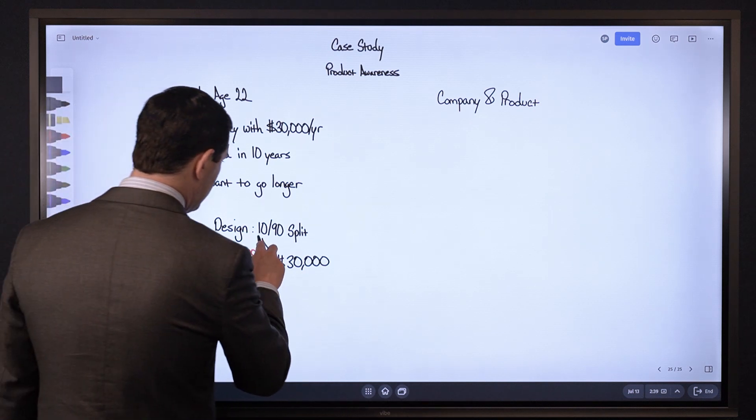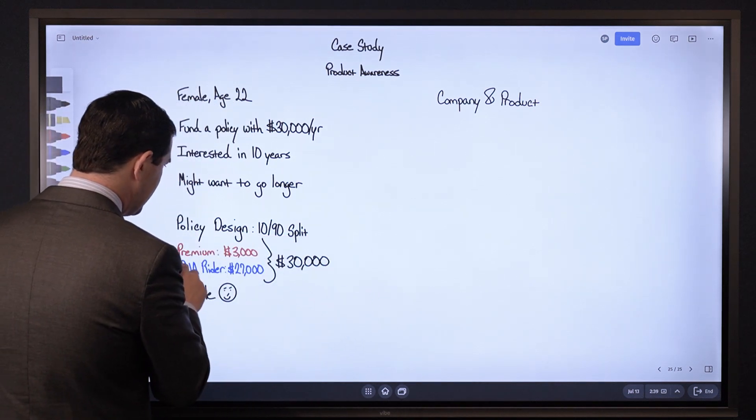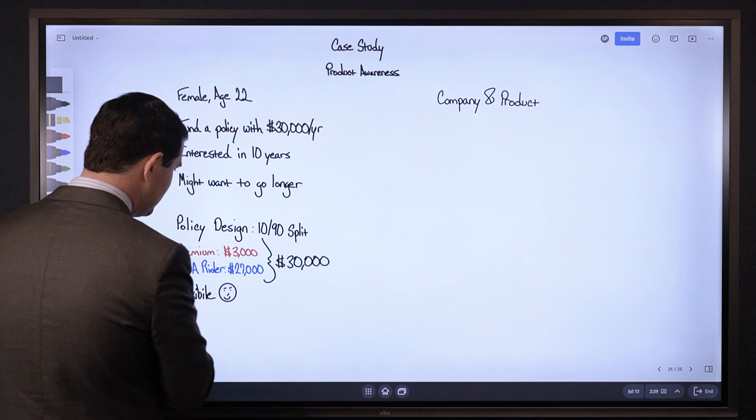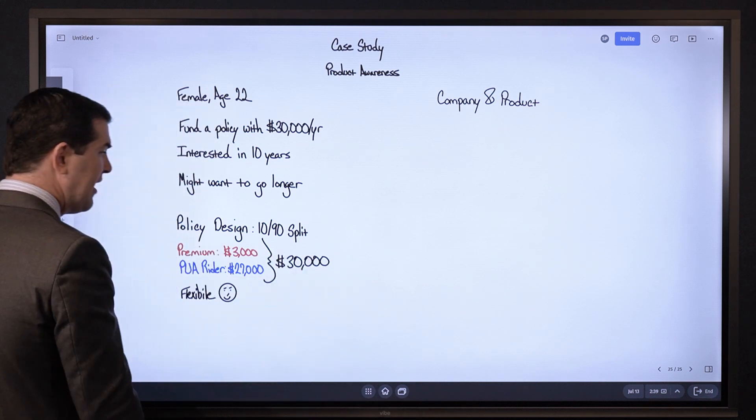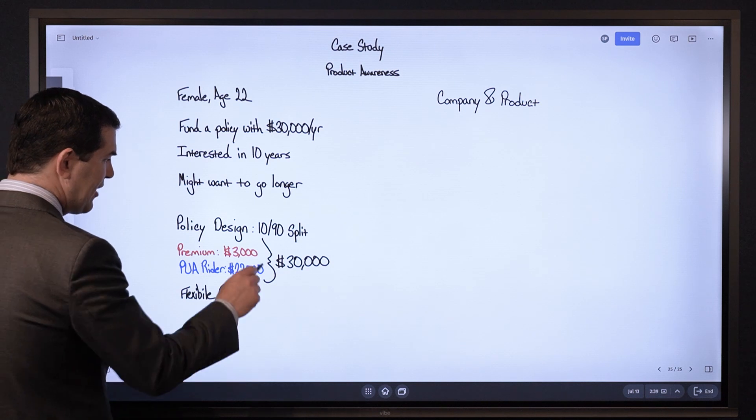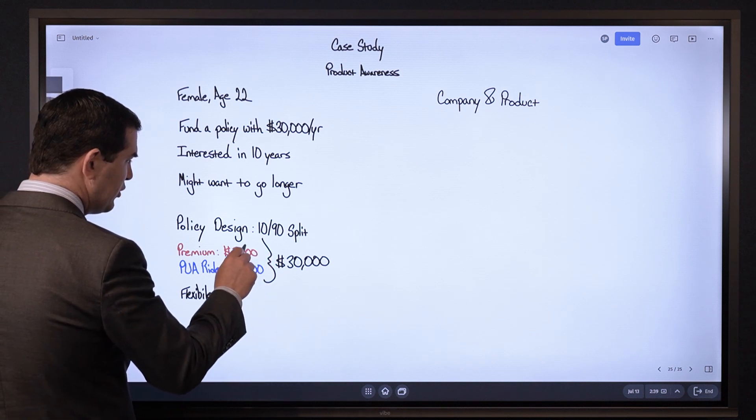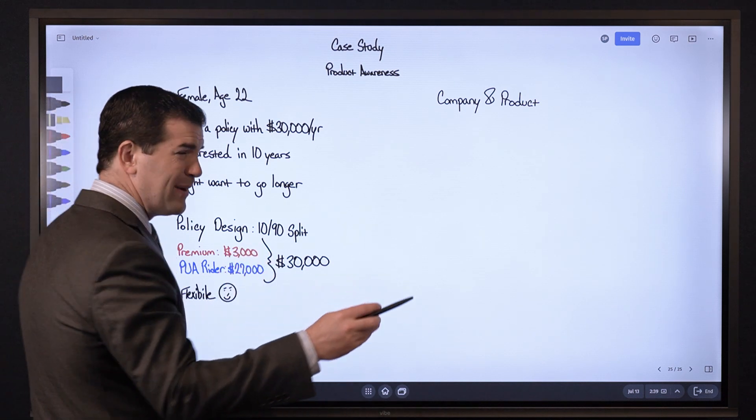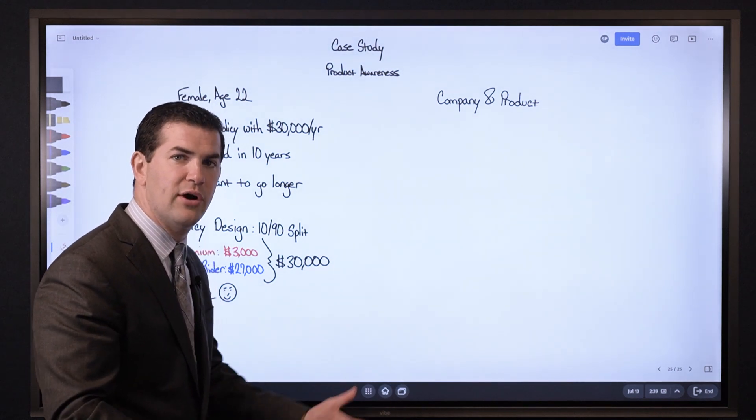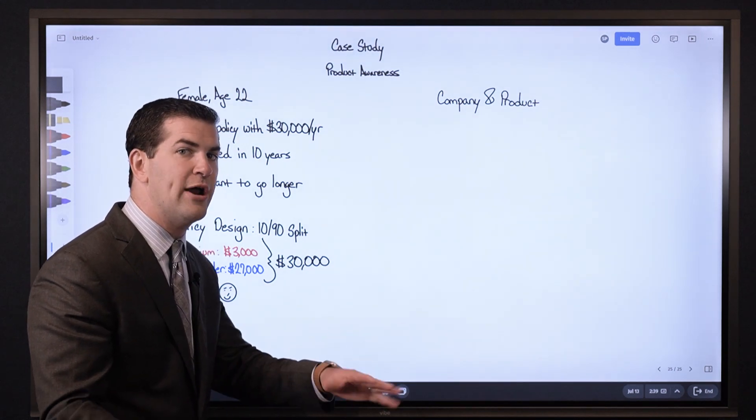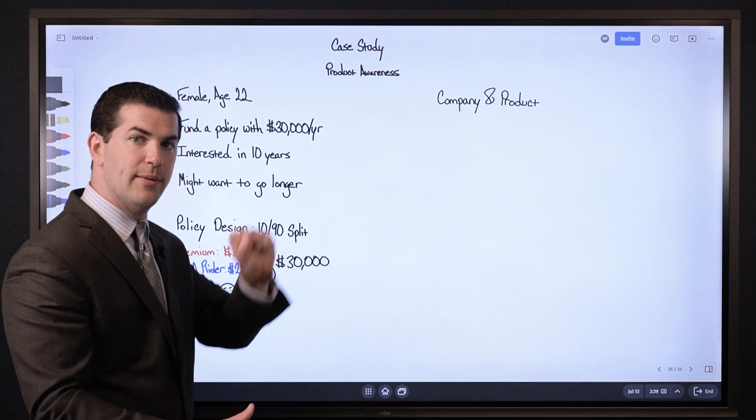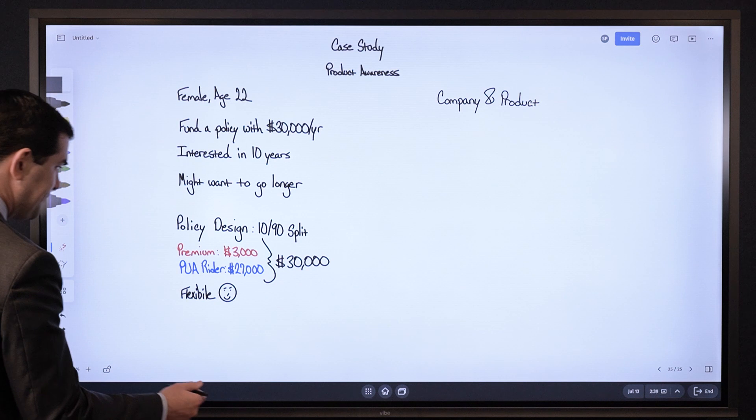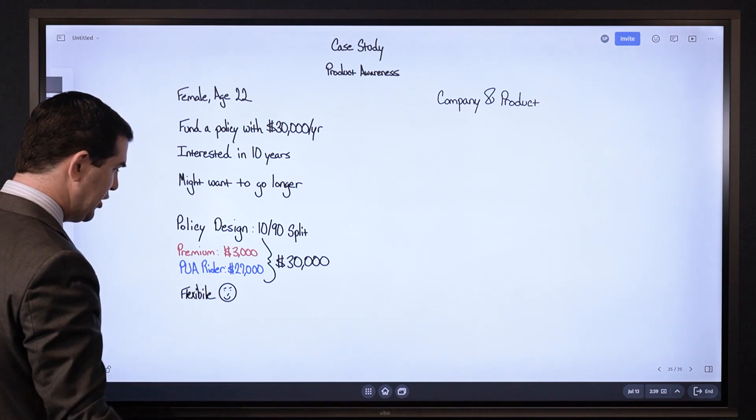The policy design for maximum cash value is the goal, so we've got a 10-90 split. The premium is $3,000, PUA Rider $27,000, so a total of $30,000. That could be weighed a little bit differently depending on the product because we'll have the term rider in there as well. When I say premium I'm including the base premium and the term insurance rider, and the rest we're just going to plow into PUAs.